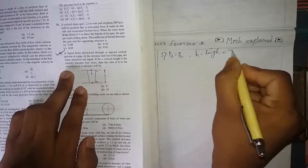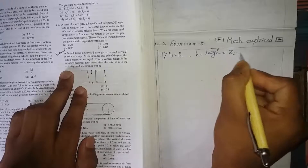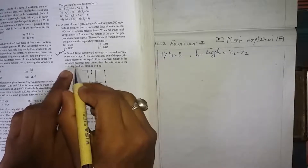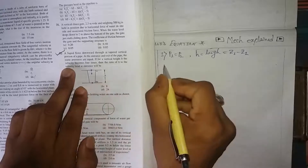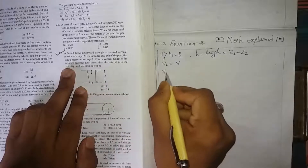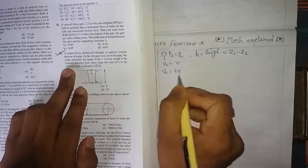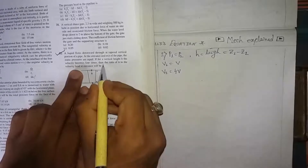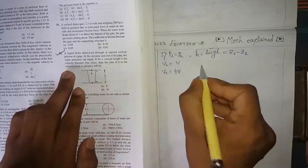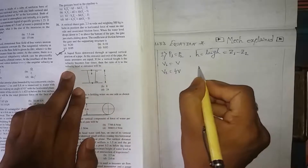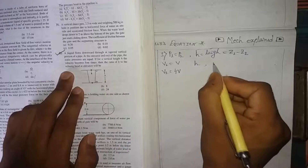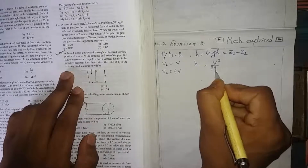The velocity becomes four times — that means if v1 equals v, then v2 will be 4v. We need to find the ratio of h to the velocity head. The velocity head is v² divided by 2g.